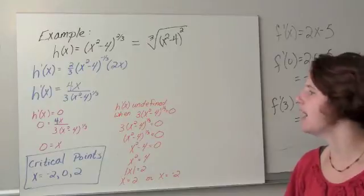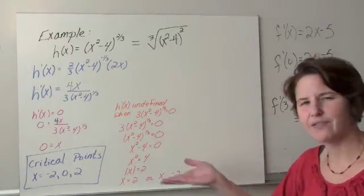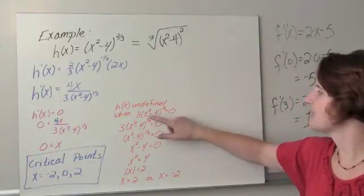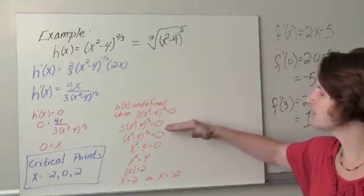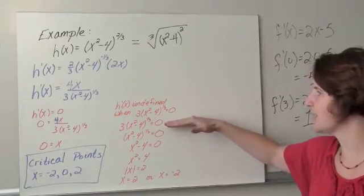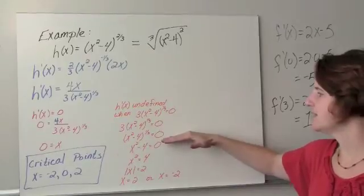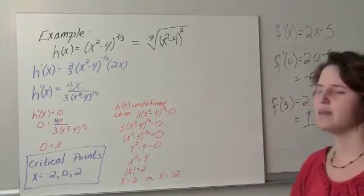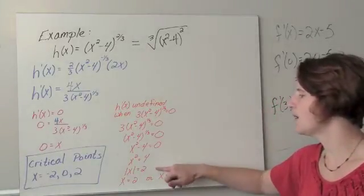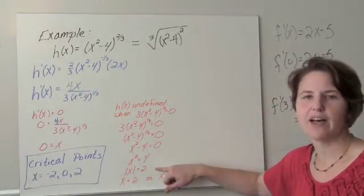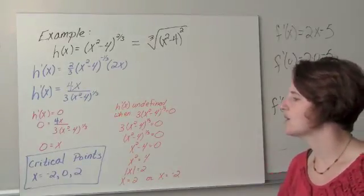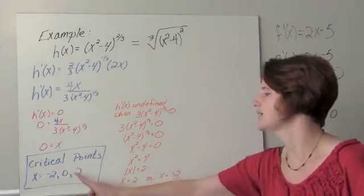h prime of x is undefined. That would be, I have a fraction here, when the denominator is equal to 0. So that would be when (x squared minus 4) to the 1/3 power times 3 equals 0. Now we're just doing algebra, divide both sides by 3, cube both sides. We have x squared minus 4 equals 0. That means x squared equals 4, which means the absolute value of x equals 2. So x equals 2 or negative 2, and our critical points are negative 2, 0, and 2.